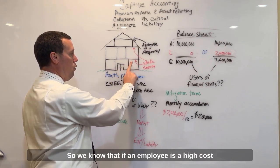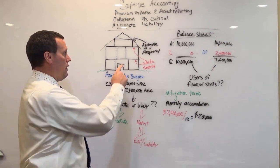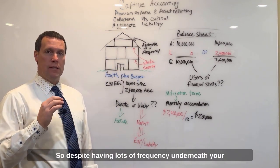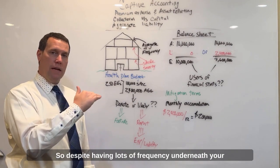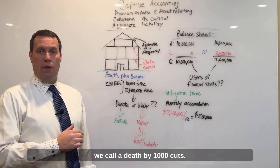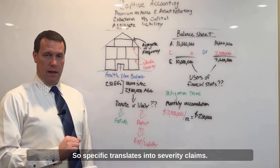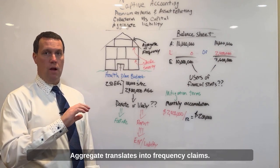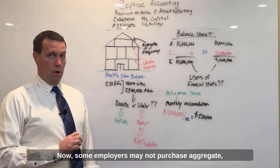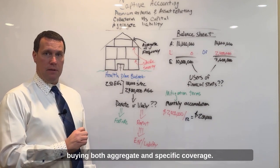We know that if an employee is a high-cost employee, you can only pay up to the ceiling amount. The aggregate represents the roof of your house. Despite having lots of frequency underneath your ceiling, your aggregate protects you overall for what we call a death by a thousand cuts. So, specific translates into severity claims, and aggregate translates into frequency claims. Some employers may not purchase aggregate, but let's assume that the employer is buying both aggregate and specific coverage.